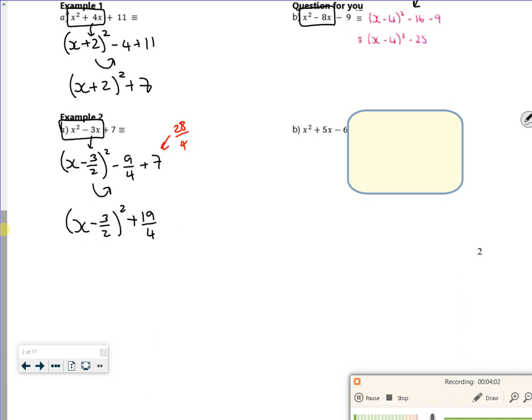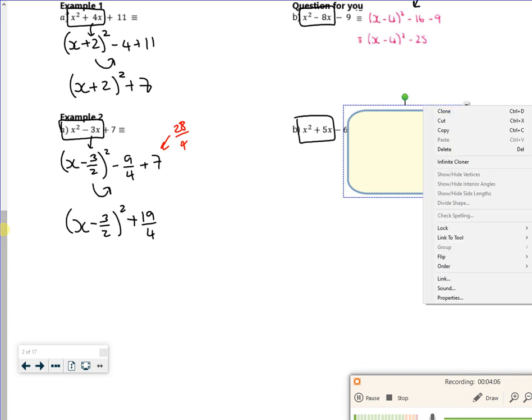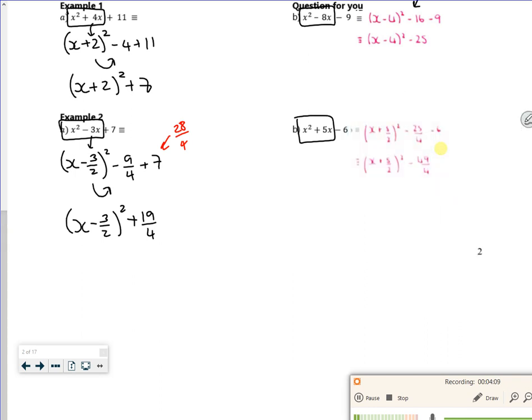One for you to do. So you'll have an x with a 5 over 2, then you'll square the 5 over 2 and take it away, 25 over 4. Your 6 is the same as 24 over 4, so you've got minus 25, minus 24 is minus 49. If you can read it, that should be minus 49 over 4.